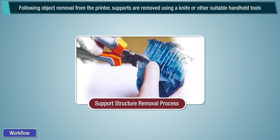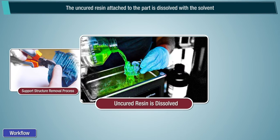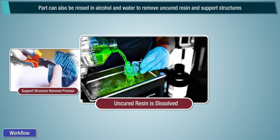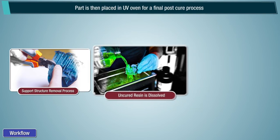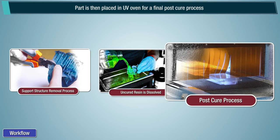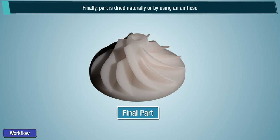Following object removal from the printer, supports are removed using a knife or other suitable handheld tools. The uncured resin attached to the part is dissolved with solvent. The part can also be rinsed in alcohol and water to remove uncured resin and support structures. The part is then placed in a UV oven for a final post-cure process to ensure a high quality object with desired mechanical properties. Finally, the part is dried naturally or by using an air hose.